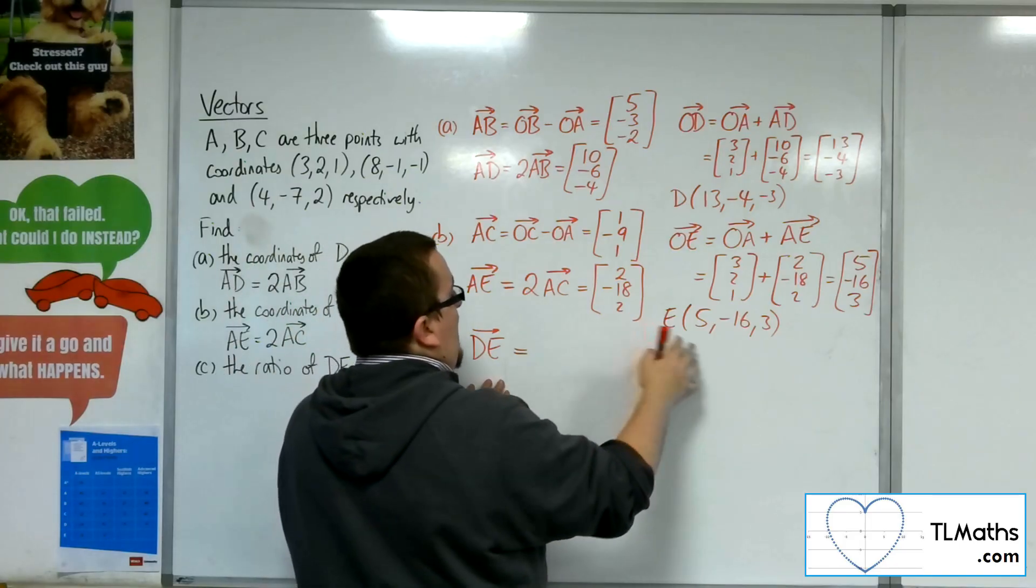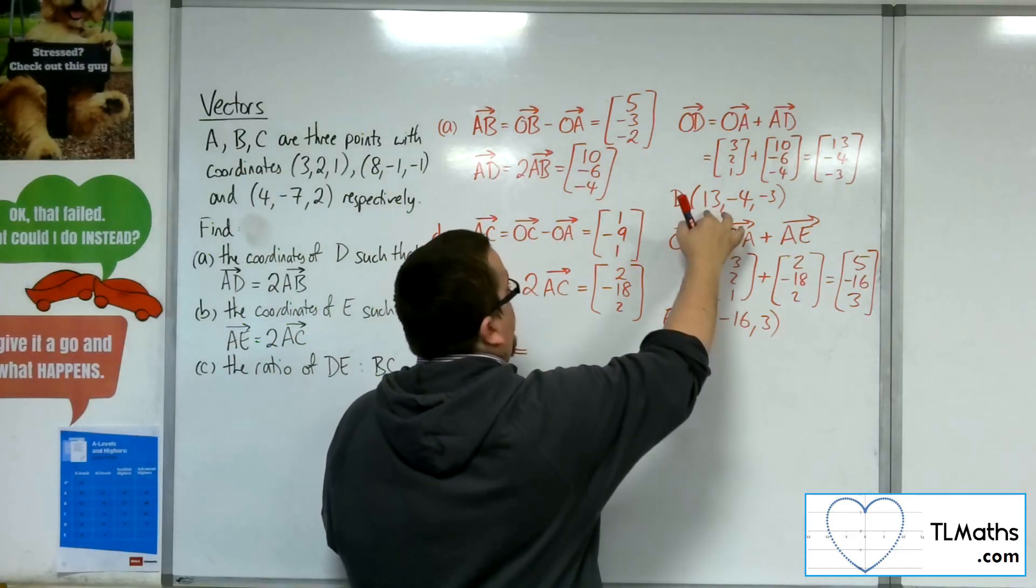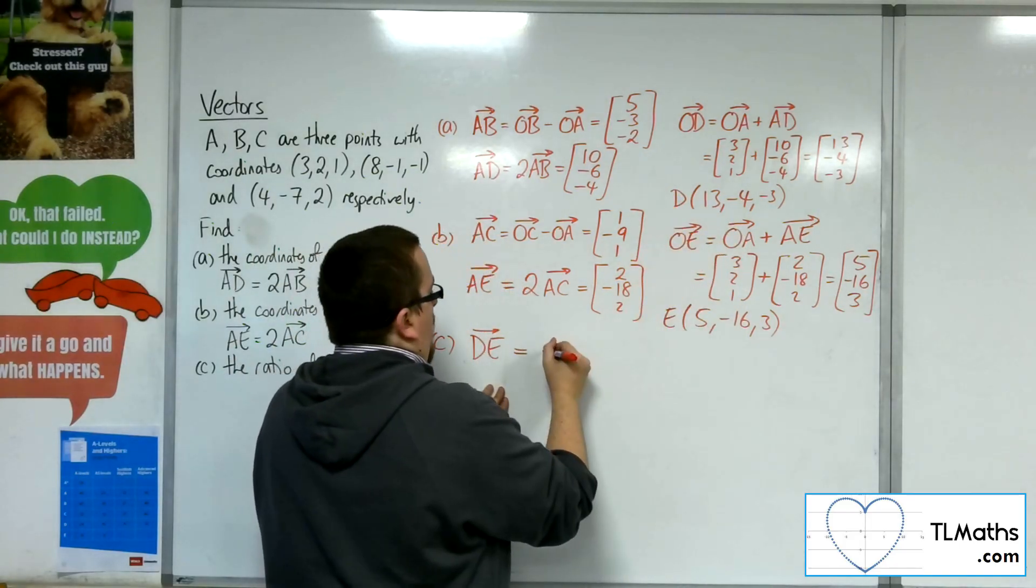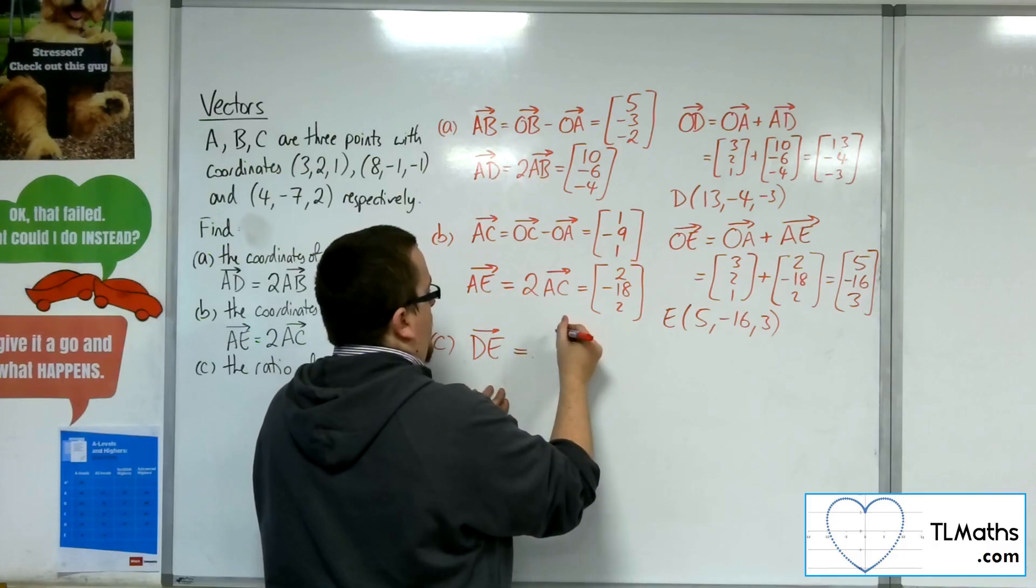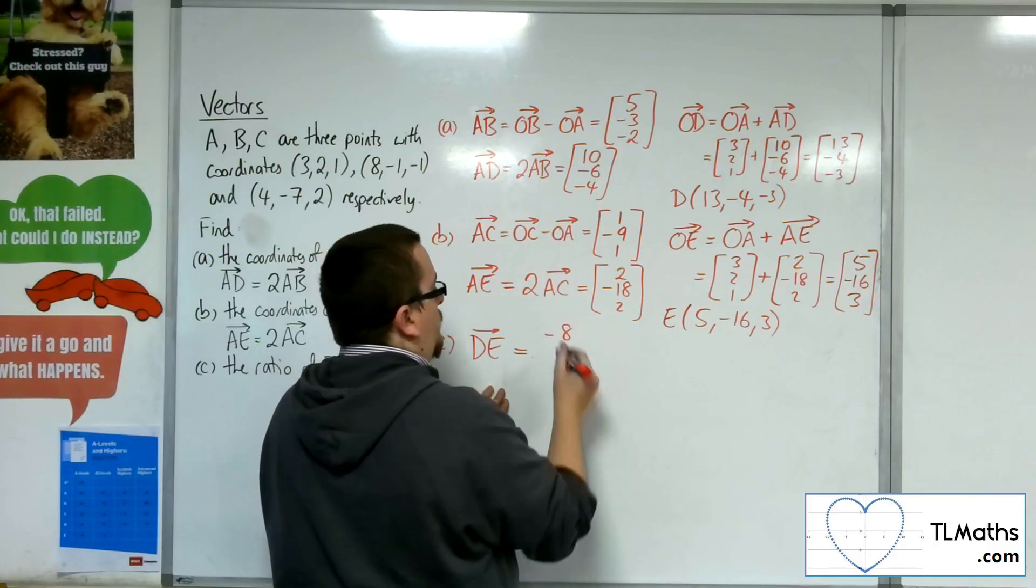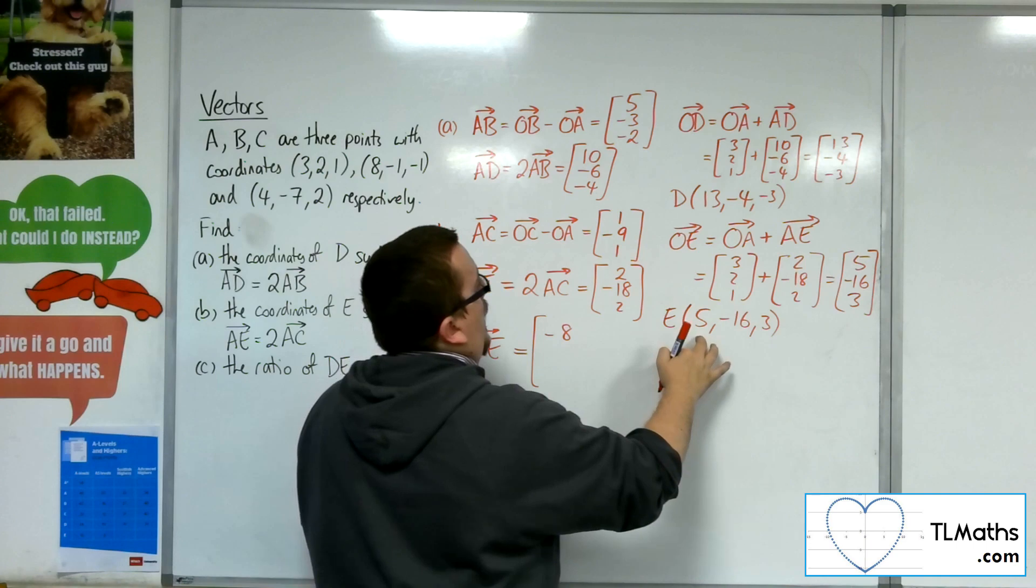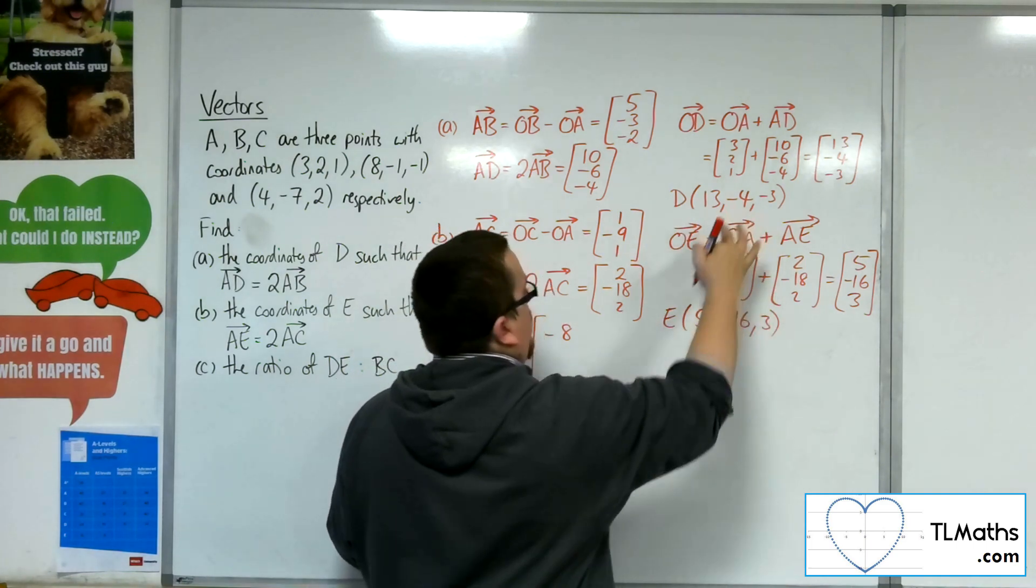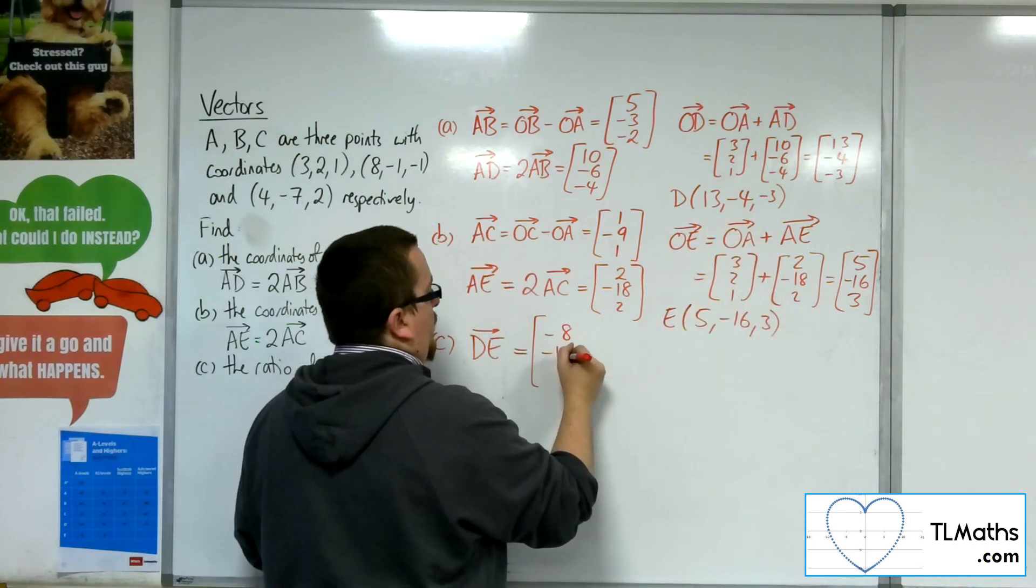So that will be E minus D. So 5 take away 13 is minus 8. Minus 16 take away minus 4 is minus 12.